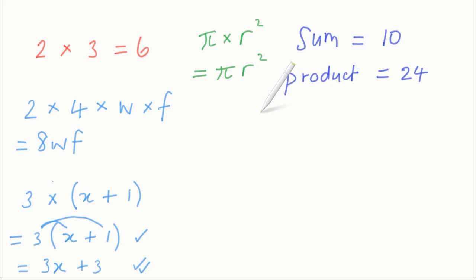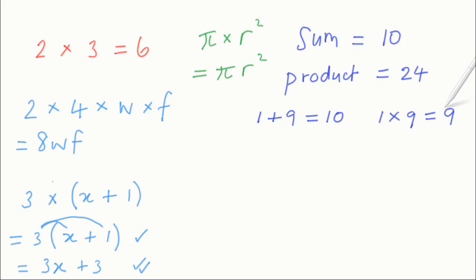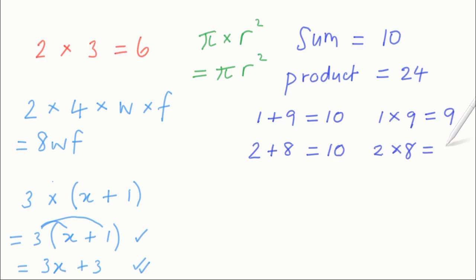1 plus 9 equals 10. But is the product of 1 and 9 equal to 24? The product of 1 and 9 is the answer you get when you multiply 1 by 9, and that is 9 — definitely not 24. So the two numbers are not 1 and 9. What about 2 and 8? 2 and 8 definitely add to 10, but does 2 times 8 equal 24? No, it doesn't — it equals 16.